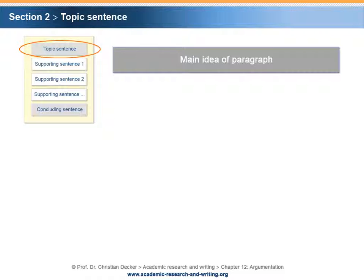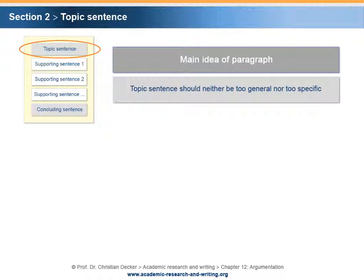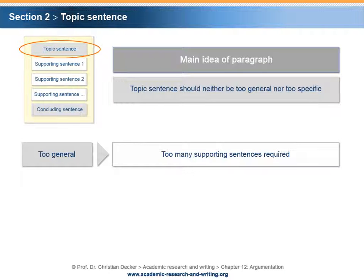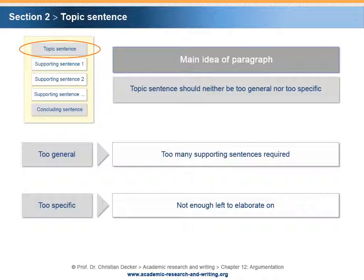The topic sentence has to be formulated carefully. The way of formulating a topic sentence determines the following sentences of the paragraph. That means, for example, that the topic sentence should neither be too general nor too specific. If the topic sentence contains a statement that is too general, it will take too many supporting sentences to elaborate on the overly general point — in this case, the paragraph will be too long. On the other hand, if the topic statement is too specific, there might not be enough left to elaborate on, and the topic sentence does not state a topic but an already elaborated argument.